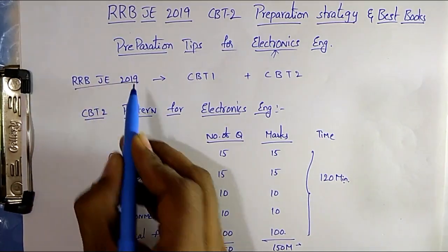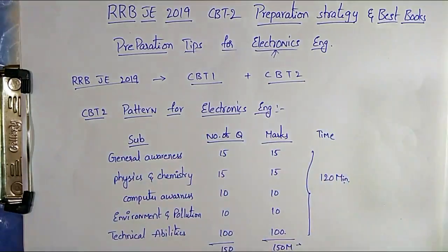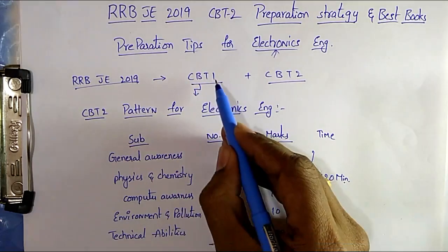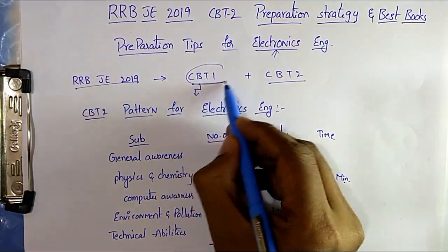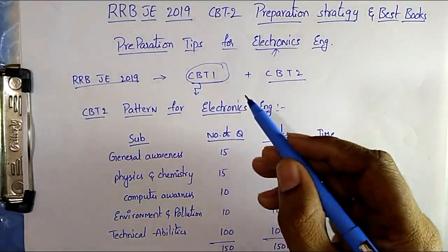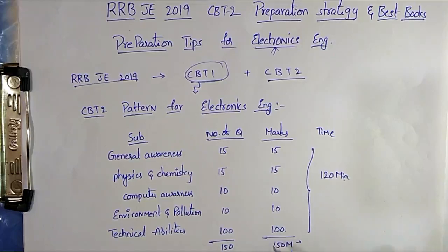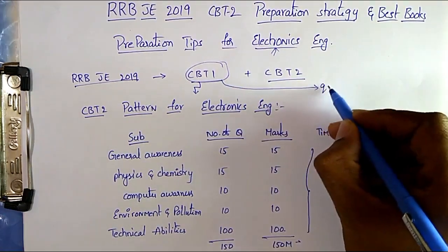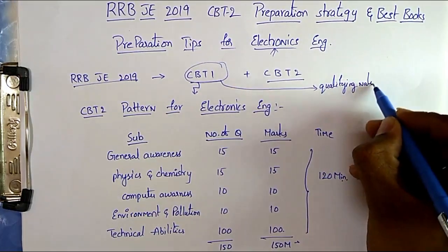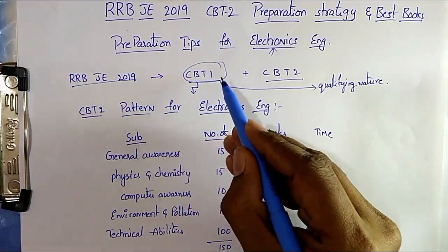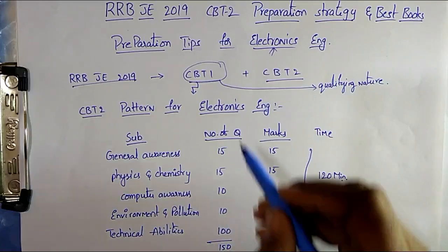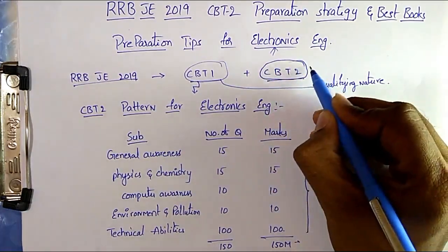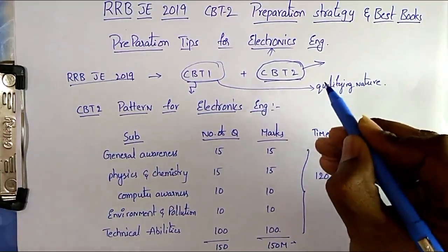We know that RRB JE 2019 has two CBTs — CBT-1 and CBT-2. I have already posted a video on CBT-1 preparation strategy, best books, and preparation tips. So first go and watch the CBT-1 strategy and then come for this CBT-2. CBT-1 exam is only qualifying in nature — that means its weightage is not considered for final selection. CBT-1 is only to qualify for CBT-2. So the final selection is based only on CBT-2. So CBT-2 is most important.